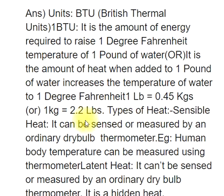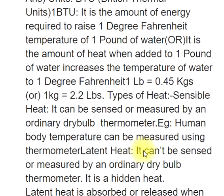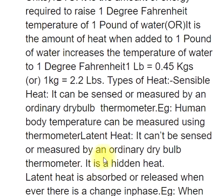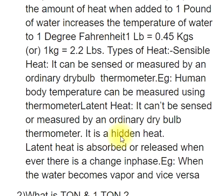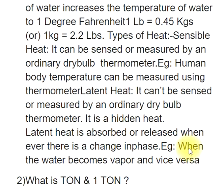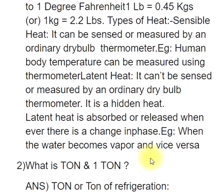Sensible heat can be sensed or measured by an ordinary dry bulb thermometer. E.g., human body temperature can be measured using a thermometer. Latent heat cannot be sensed or measured by an ordinary dry bulb thermometer — it is a hidden heat. Latent heat is absorbed or released whenever there is a change in phase, e.g., when water becomes vapor and vice versa.